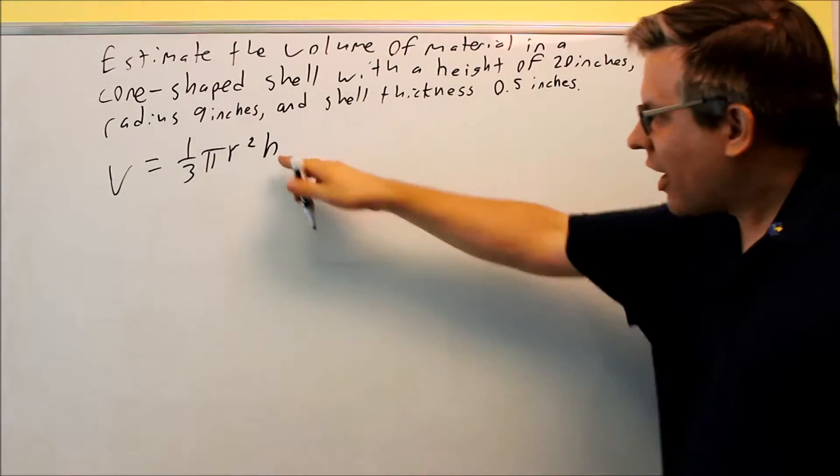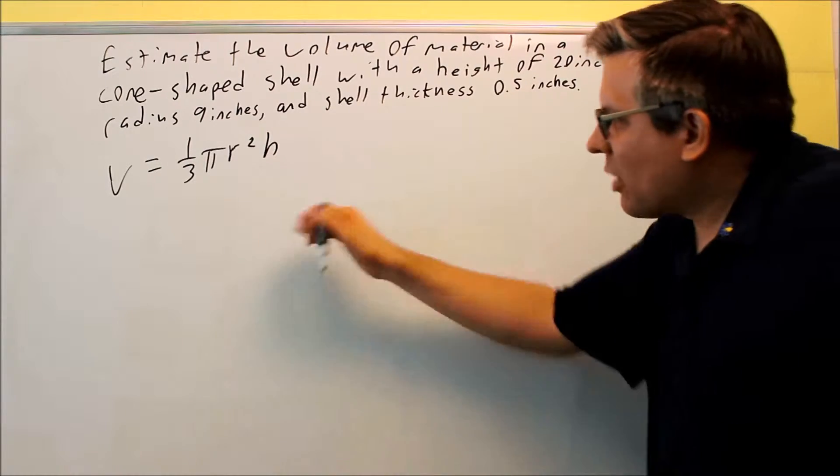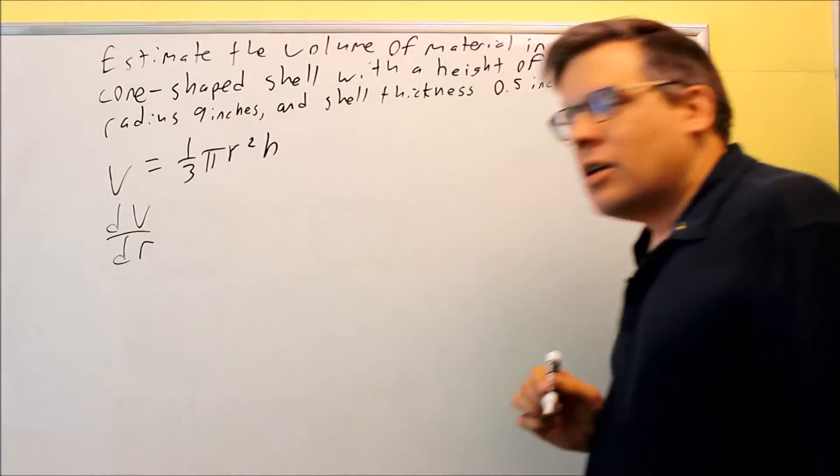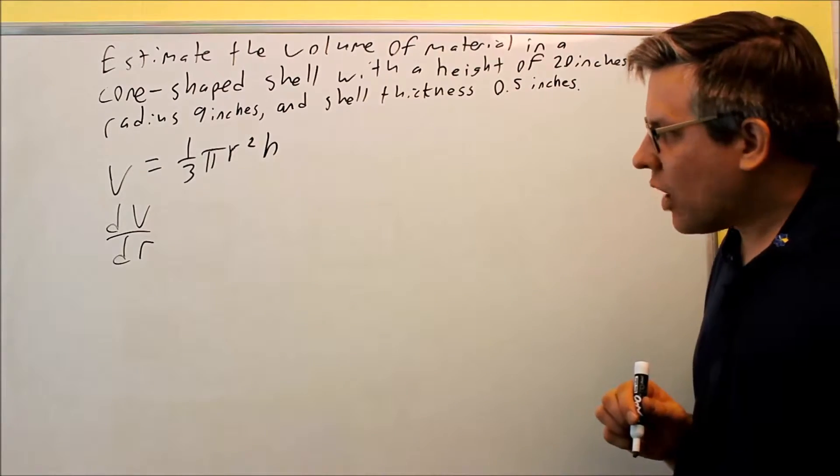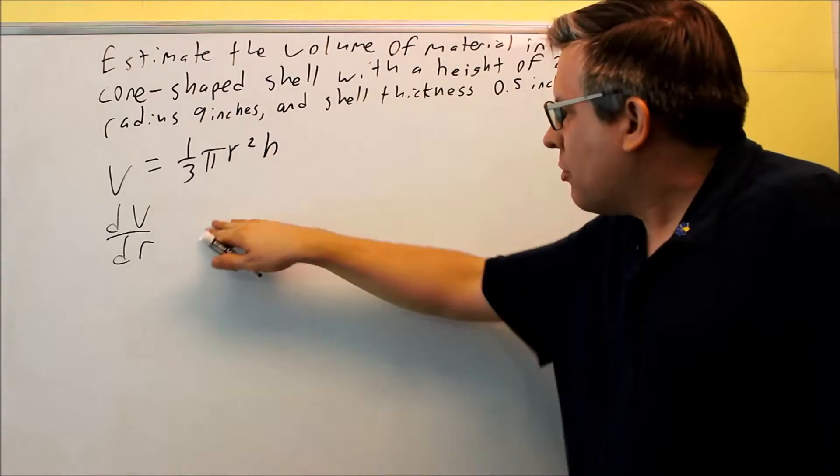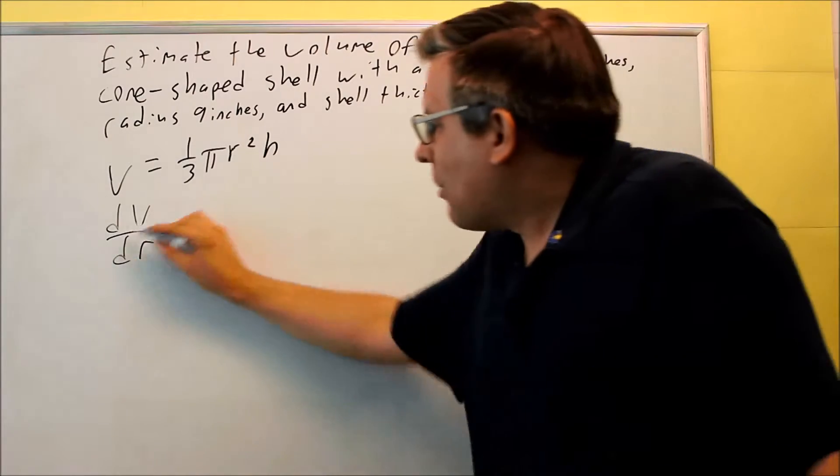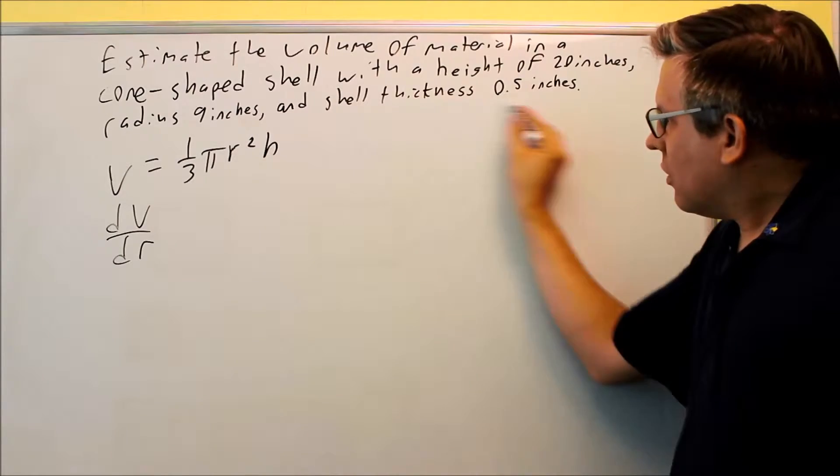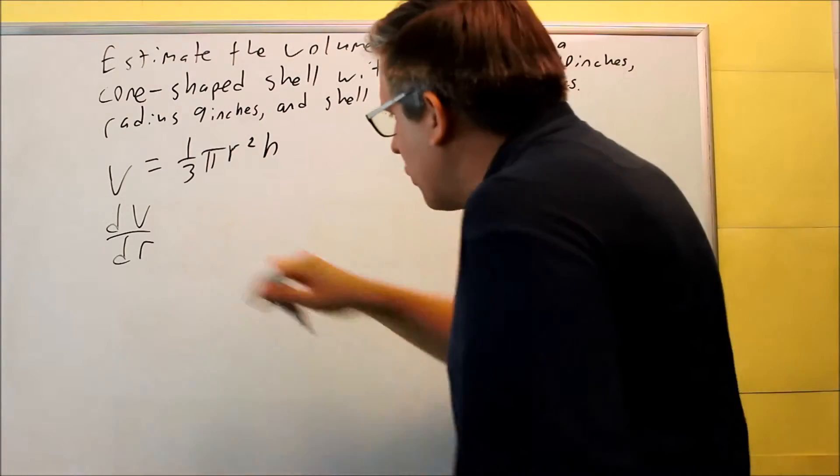So actually in this case I want to treat the height as a constant. So what I'm going to do is I want to find dV/dr, the derivative with respect to the radius. The reason why is because when I multiply both sides and get dV, that's my change in volume, I'm going to have a dr there as one of my variables and actually the dr will be the shell thickness.